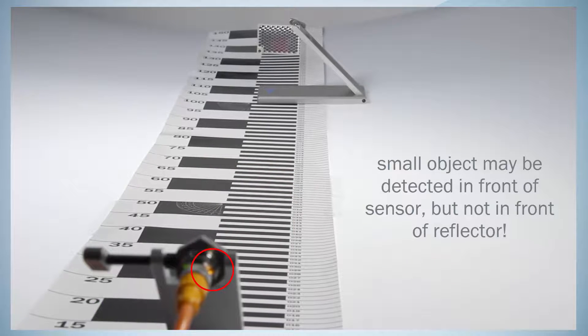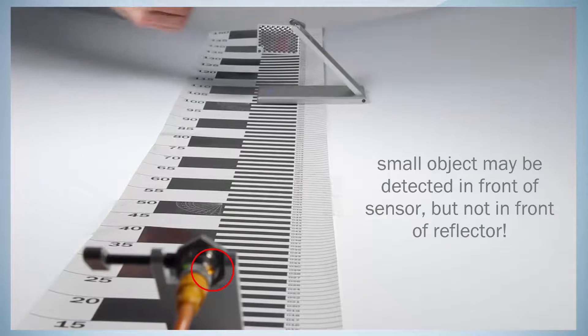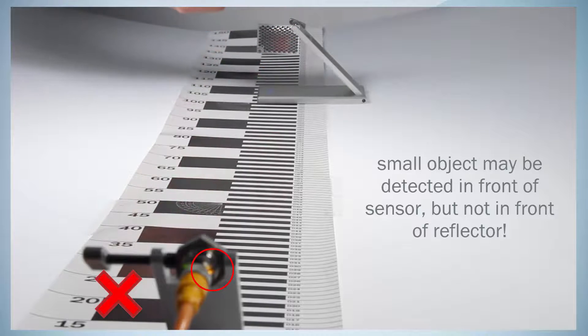due to the increasing light spot size closer to the reflector, a small object might be detected close to the sensor but not close to the reflector.